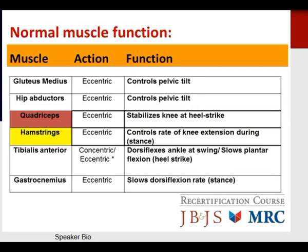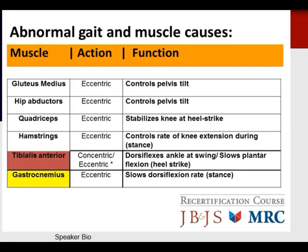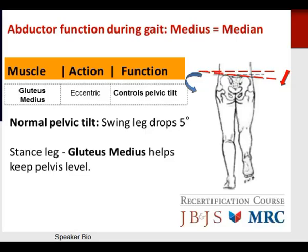Focusing on key muscle groups: the gluteus medius and hip abductors control pelvic tilt; the quadriceps and hamstrings work together to stabilize the knee at heel strike as well as for knee extension during stance; and the tibialis anterior and gastrocnemius work together with ankle dorsiflexion and plantar flexion. The tibialis anterior and gastrocnemius represent the area of the lower extremity in gait where there is a transition between concentric and eccentric activity.